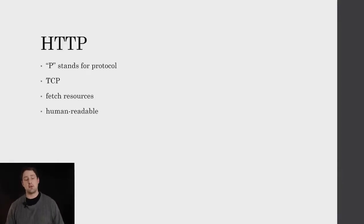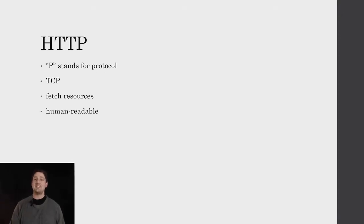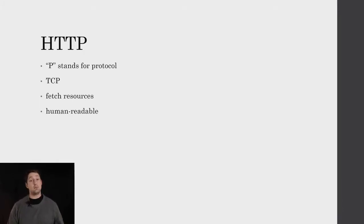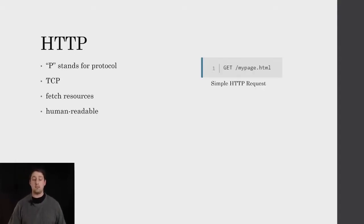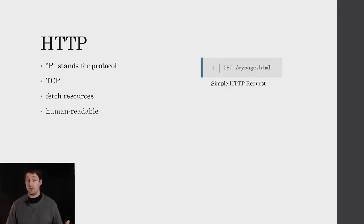Let's get into some history. HTTP — the P stands for protocol. This is a TCP protocol used to fetch resources from a remote or local server. It's generally human readable, meaning it's not compressed or zipped. You can look at these packets in Wireshark, whether HTTP or HTTPS if decrypted, and get an understanding of what's going on. From the Mozilla documentation, a simple HTTP GET request is one of the most simple — just get a page, and the server responds with the actual resource requested.